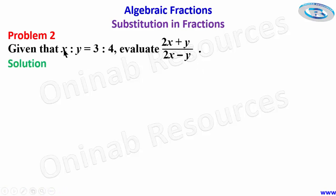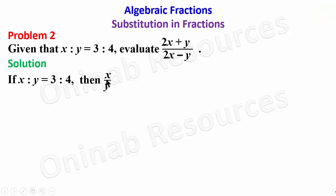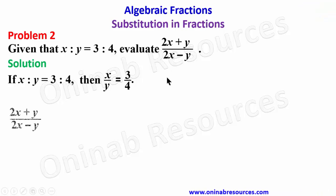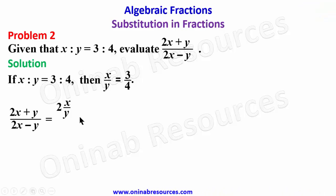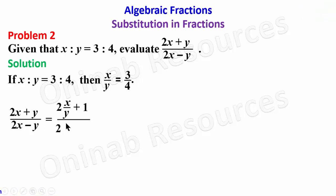In our solution, since x ratio y is equal to 3 ratio 4, then x over y is equal to 3 over 4. We go back to the expression and express it to accommodate x over y. To do that, we divide every term of the expression by y, so that 2x divided by y gives 2 times x over y, then plus 1, over 2 times x over y minus 1. Then we substitute wherever we see x over y.